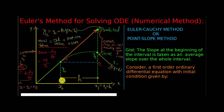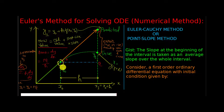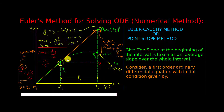The next stage is we are going to draw a tangent at this particular point, which is x0, y0. Once we draw the tangent, it will make some angle theta, and once this theta is there, we can always discuss the slope, that is dy by dx.